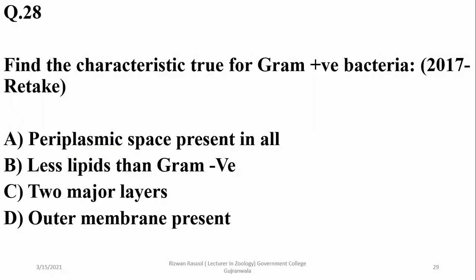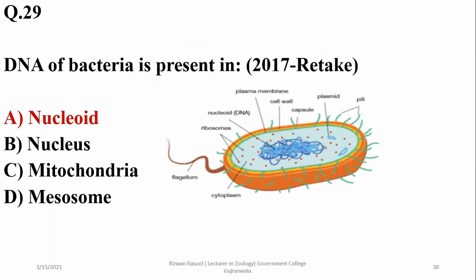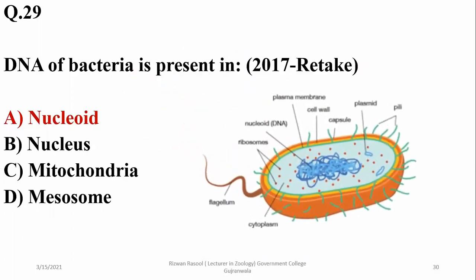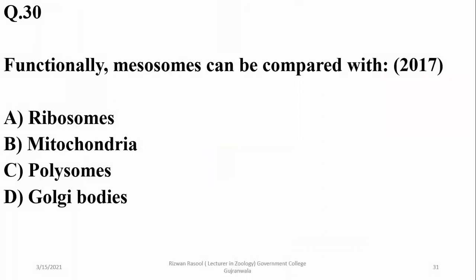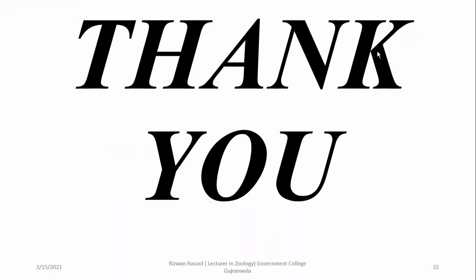Gram positive bacteria have less lipid content than gram negative bacteria. The DNA of a bacterium is present in the nucleoid, so alpha is correct. Functionally, mesosomes can be compared with mitochondria. That covers all the important questions about bacteria or Kingdom Prokaryote.